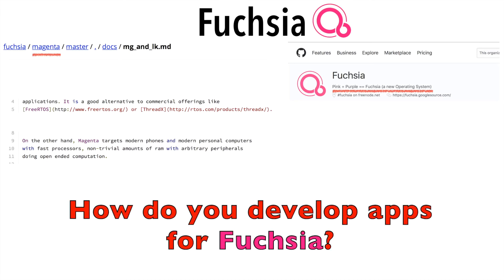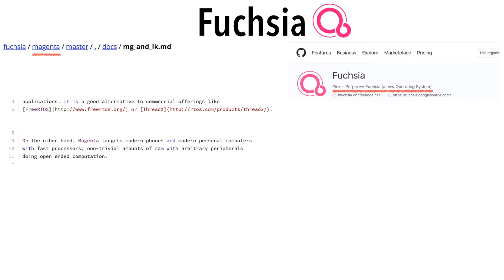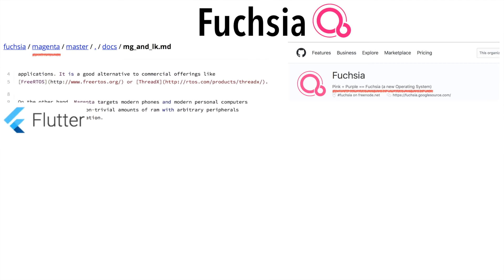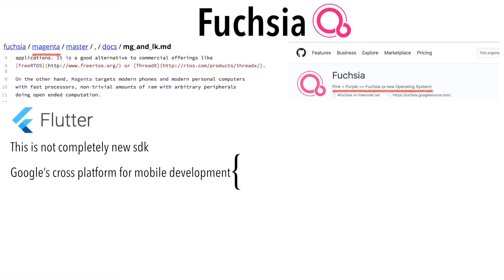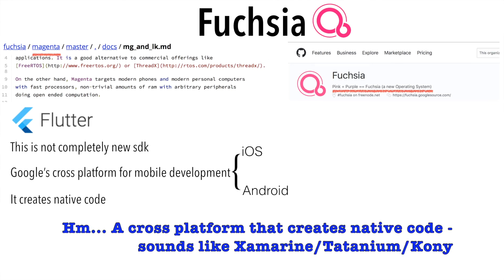The next obvious question would be: how do you develop apps for this new Fuchsia operating system? Well, there is an SDK called Flutter. This SDK has been in existence for quite some time — this is not something new. It is Google's cross-platform SDK in which, using a single codebase, mobile apps can be developed for both iOS and Android. Flutter also creates native code.